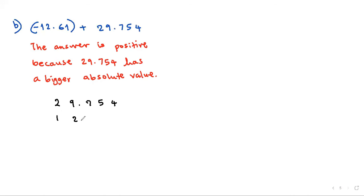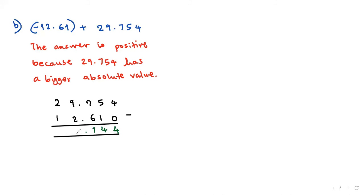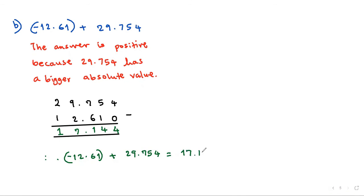So we compute 29.754 minus 12.61 — write a zero to balance. 4 minus 0 gives 4; 5 minus 1 gives 4; 7 minus 6 gives 1; 9 minus 2 gives 7; 2 minus 1 gives 1. Therefore negative 12.61 plus 29.754 equals 17.144.